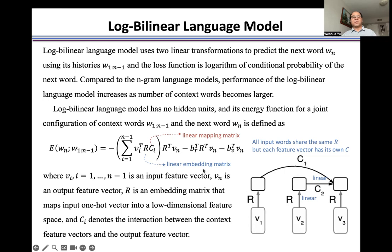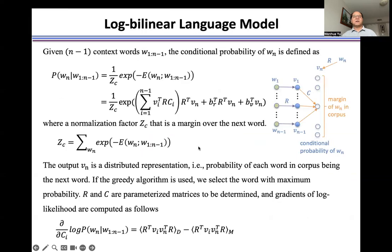The goal of log-bilinear language model is to predict the next word using its history. Given n-1 context words from W1 to Wn-1, the conditional probability of Wn is defined using the energy function, where Zc is the margin over the next word, Wn.